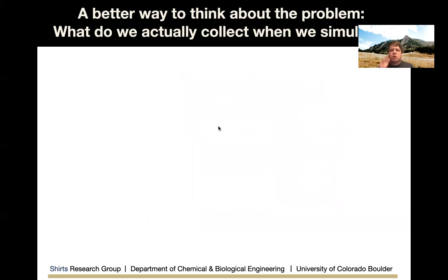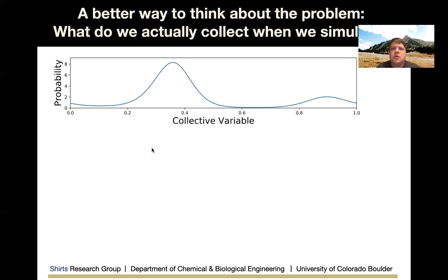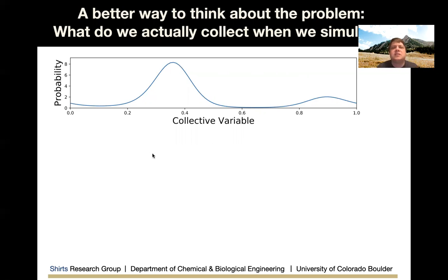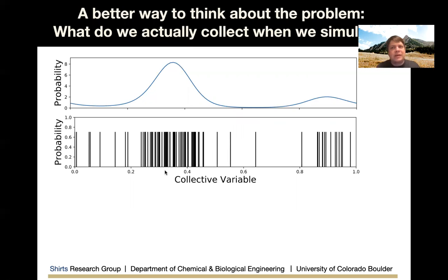A better way to think about the problem is: what do we actually collect when we simulate? We're interested in some probability as a function of collective variable, which is usually relatively smooth — like a pair distribution function between two atoms. But what we actually get are samples: more samples where the probability is high, fewer where it's low. If we replace these samples with a kernel density approximation and the kernel is too small, we get something very bumpy; too wide and there are real errors, with more probability than the original distribution warrants.